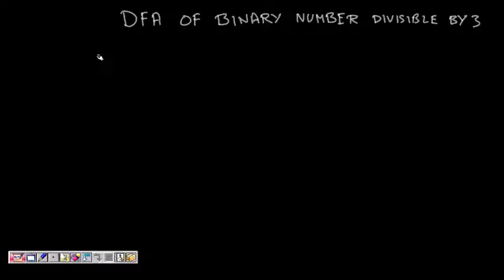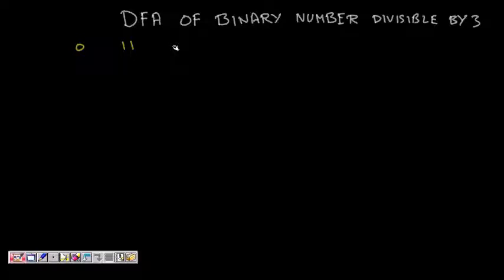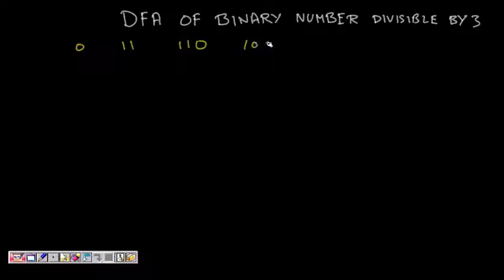For example, 0 is divisible by 3, 3 is divisible by 3, 6 is divisible by 3, then 9 is divisible by 3, and so on.